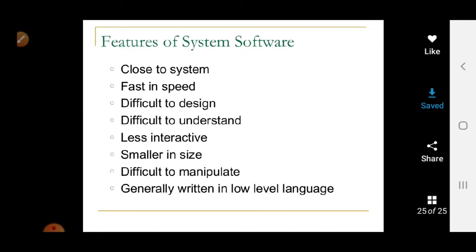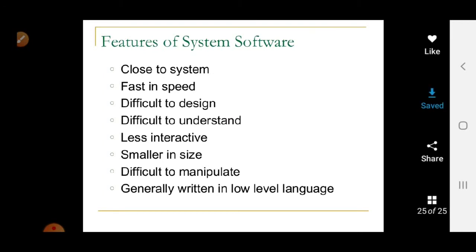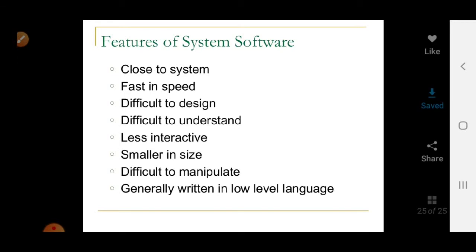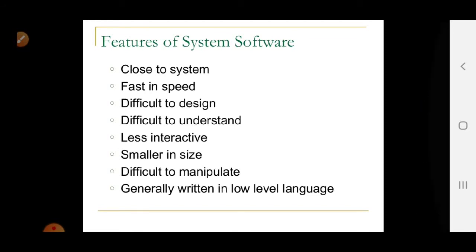Features of system software: it is close to hardware, fast in speed, difficult to design because it deals with machine language, difficult to understand for humans but easy for machines, less interactive since the graphical portion belongs to application software, and smaller in size. It is generally written in low-level languages.